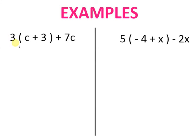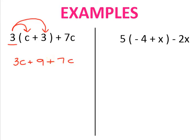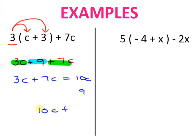Let's look at the next problem. Identify where your parentheses are — here they are, and here's the term outside. Distribute: 3 times c is 3c, and 3 times 3 is positive 9, so plus 9. Bring down the rest: plus 7c. Now combine like terms: 3c plus 7c equals 10c, and then there's a 9 by itself. Final answer: 10c plus 9.